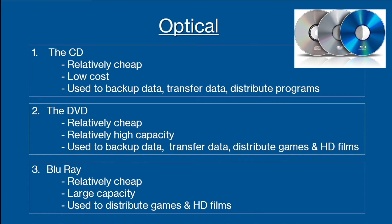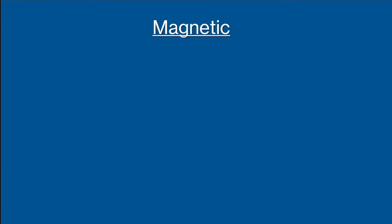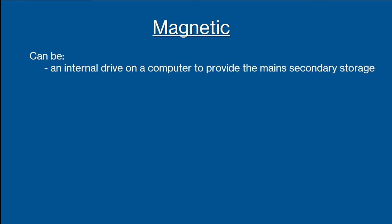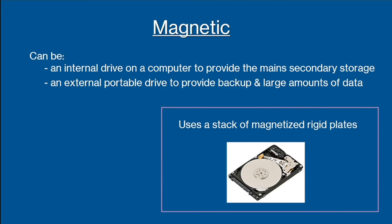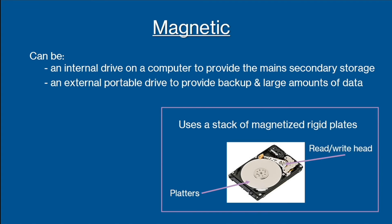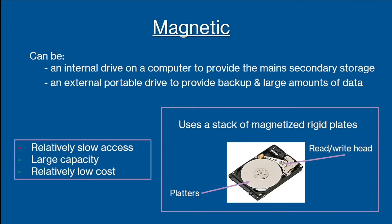The next type of storage we're going to have a look at is magnetic storage, or HDD. The magnetic hard disk drive can be an internal drive on a computer or an external portable drive. This type of storage uses a stack of magnetized rigid plates that rotate, and has a read/write head that hovers just above the surface and can move inwards and outwards over the platters to read data. This setup means that magnetic storage has a relatively slow access, but also has a large capacity for a relatively low cost.